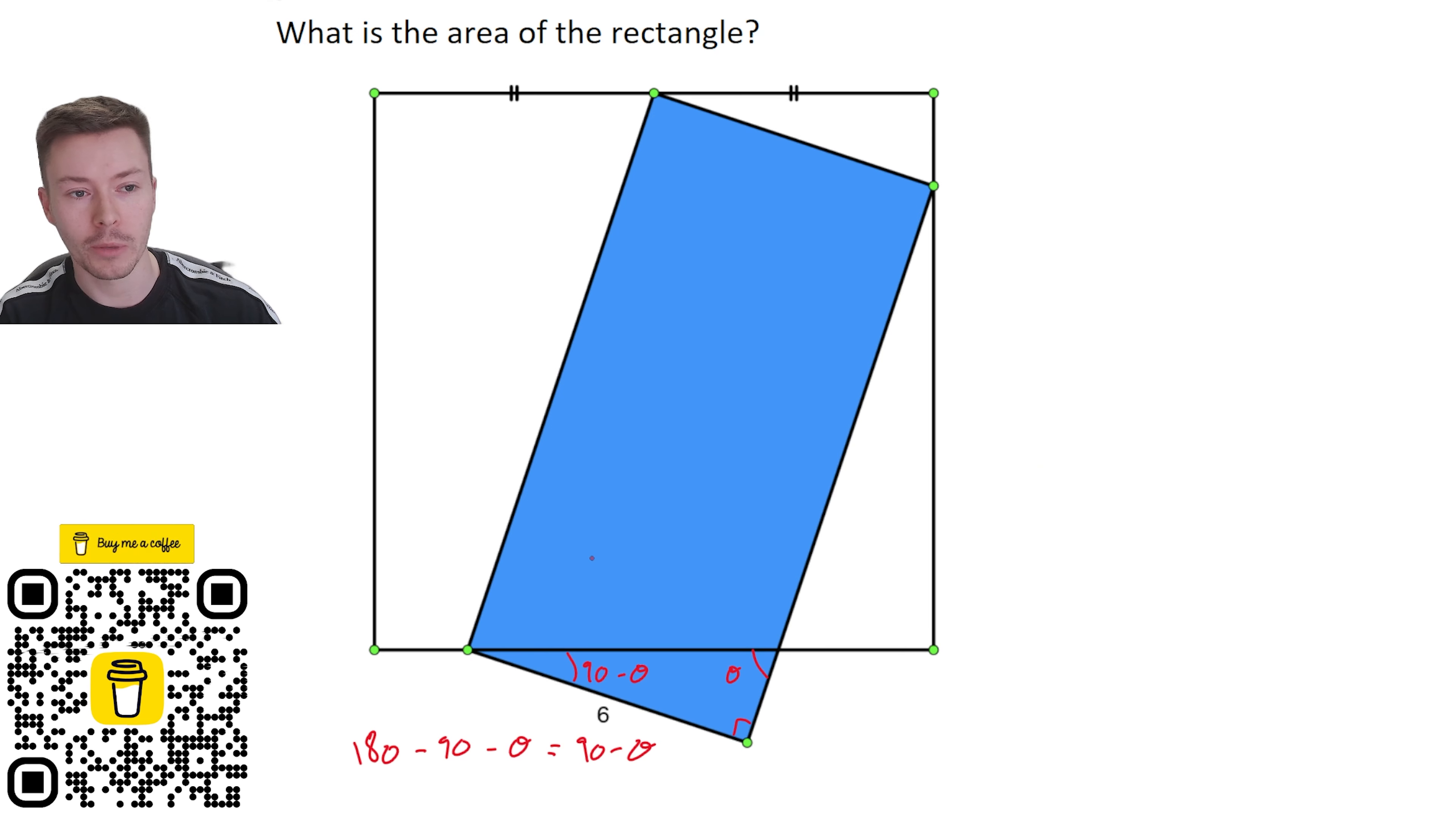That might be obvious to some people but if it's not, that's why that angle would be 90 minus theta. Now here we've got this X shape which means that we've got vertically opposite angles and those must then be equal so this must also be theta. We've got another right angle here and so this other angle must be 90 minus theta again.